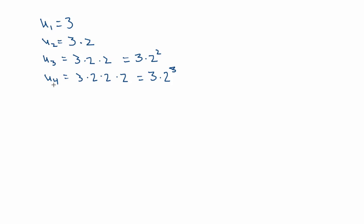Well look, so if I look to U5, for example, I'm going to miss all that middle step and take my third term, fourth term, and multiply it by 2 as well. So that's going to be 3 times 2 to the power of 4.